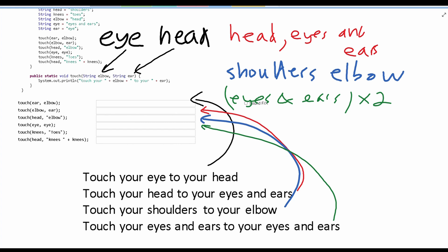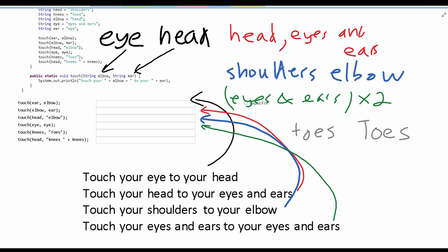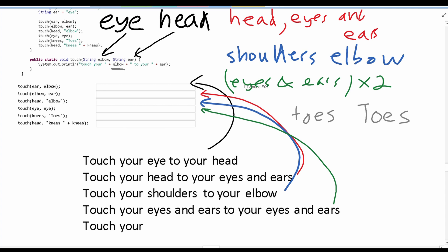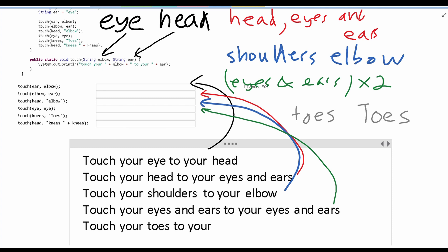We have two more to go. We have knees and toes. We need to look at knees, which is right here, and then we are given toes. We notice that knees stores a lowercase toes, and then we're given an uppercase Toes. So in our output, we're going to have touch, your, and then the elbow string is storing the first string we pass in, which is the regular toes. Then we have to your, and then we need to pass in Toes — that's uppercase. So that is the output for the second to last one.